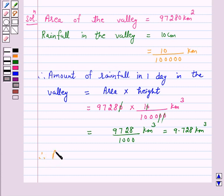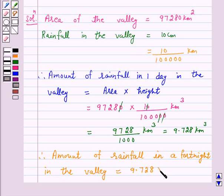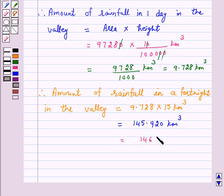Therefore, the amount of rainfall in a fortnight in the valley equals 9.728 into 15 km³, and this is equal to 145.920 km³, which is approximately equal to 146 km³.